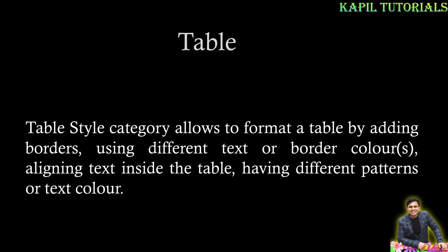After list, now table style. The table style category allows you to format a table by adding borders, using different text or border colors, aligning text inside the table, and having different patterns or text colors. The style is present to quickly format the overall table — we just put our concentration towards the table content, and the rest of the formatting is done by table style.